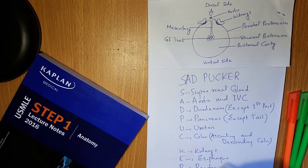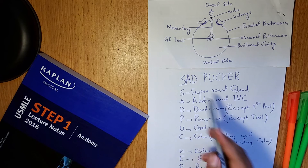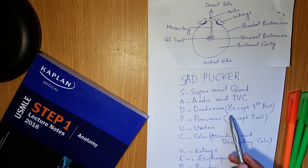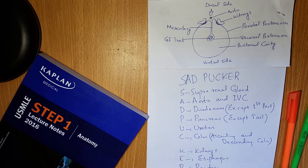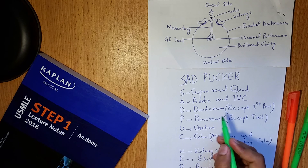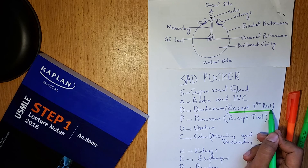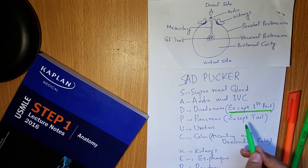You can easily remember the names of retroperitoneal organs by the mnemonic SAD PUCKER. But remember there are two exceptions: the duodenum is a retroperitoneal organ except for its first part, and the pancreas is a retroperitoneal organ except for its tail.